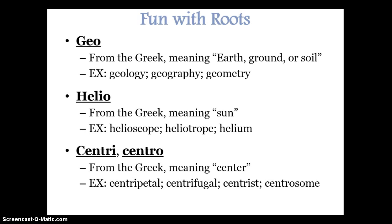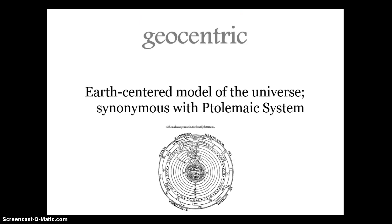Going with some more root words, we have Geo from the Greek meaning Earth, ground, or soil; Helio from the Greek meaning sun; and Sentry and Centro from the Greek meaning center. You can see the examples that go along with each of those right there. Geocentric is the Earth-centered model of the universe, synonymous with the Ptolemaic system.